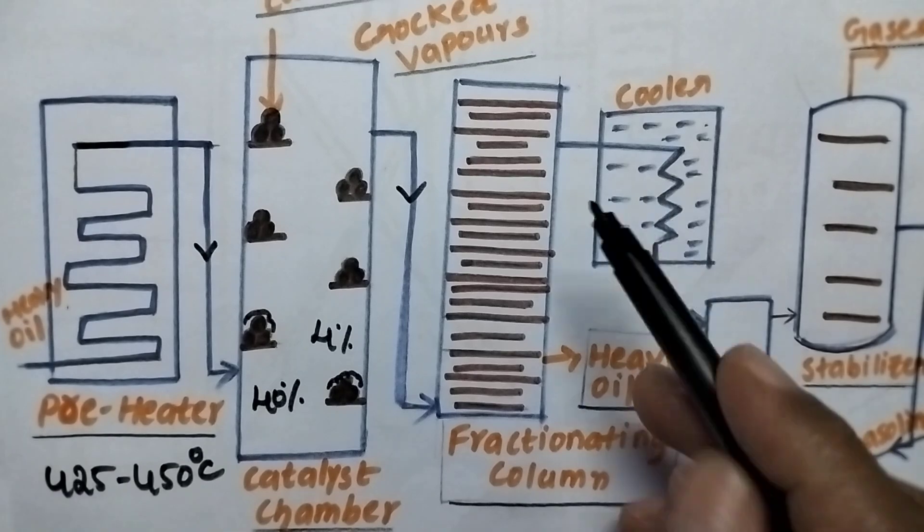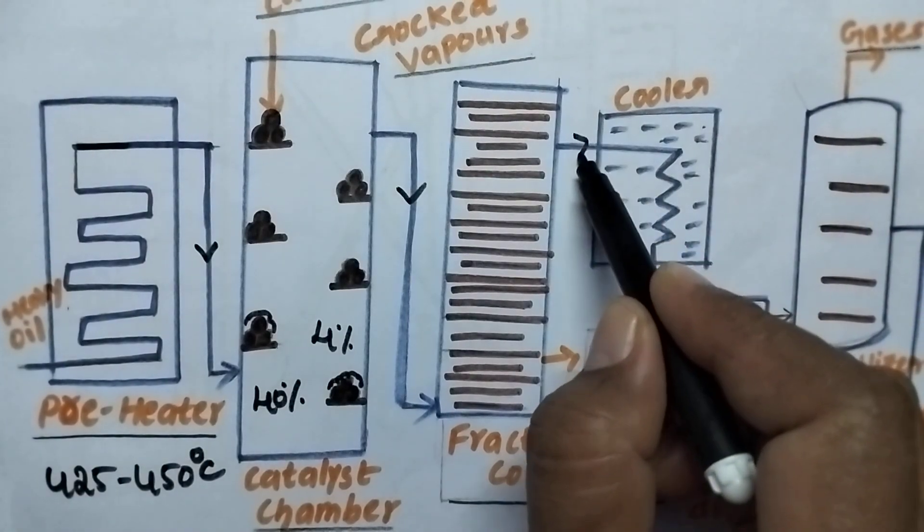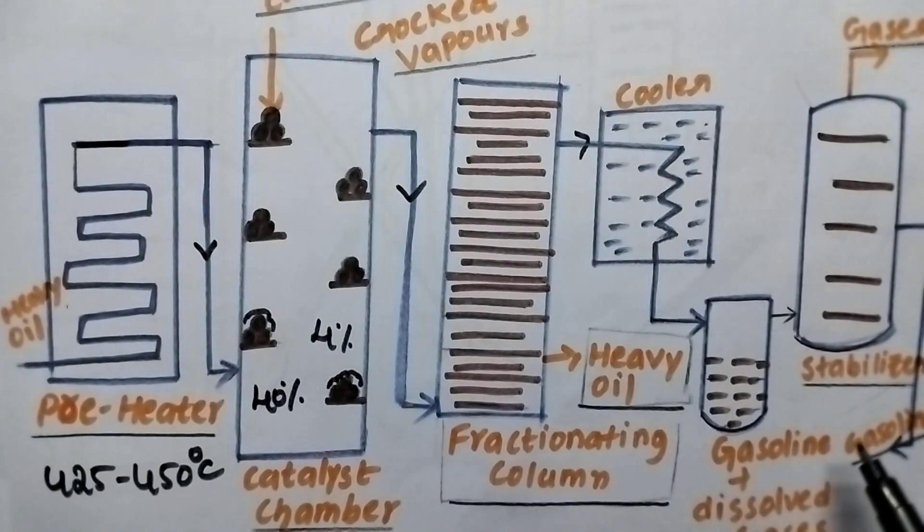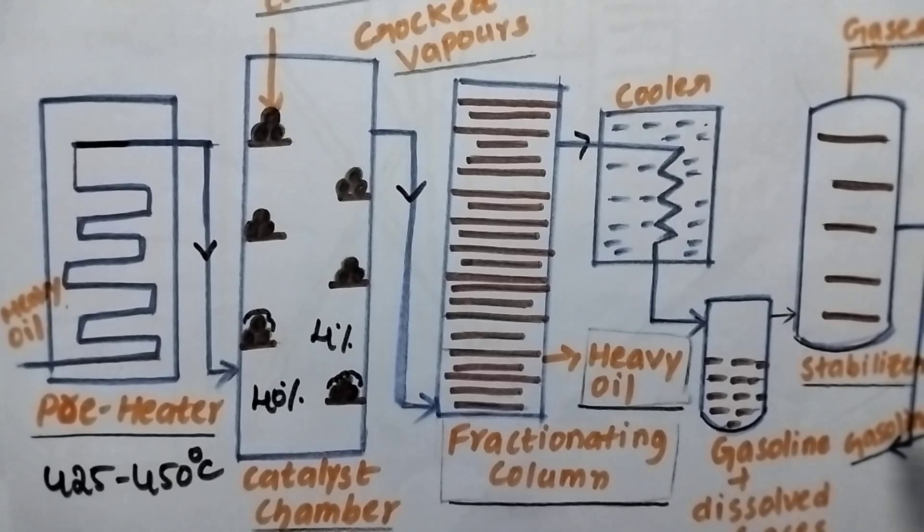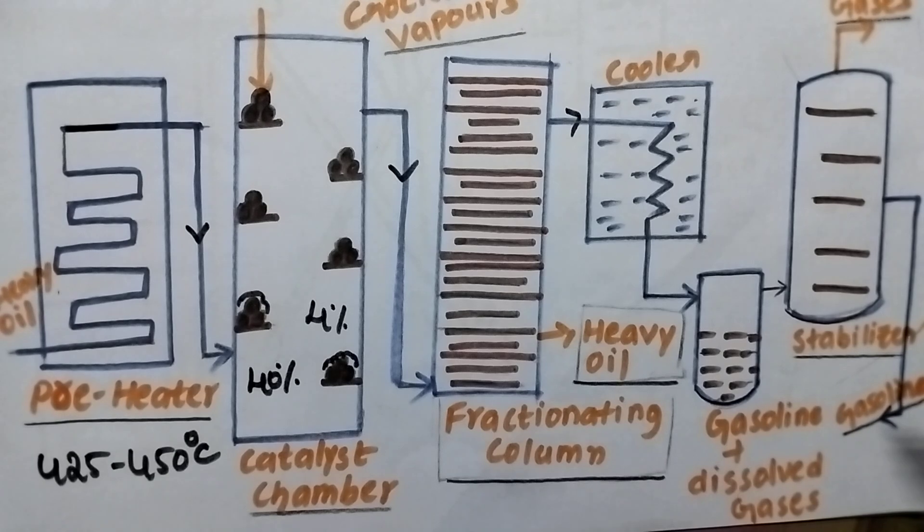The vapours of gasoline will be passed through the cooler and then passed through the stabilizer. So at the stabilizer the other lightweight gases will be separated from the gasoline and from the stabilizer it is possible to get the pure gasoline.